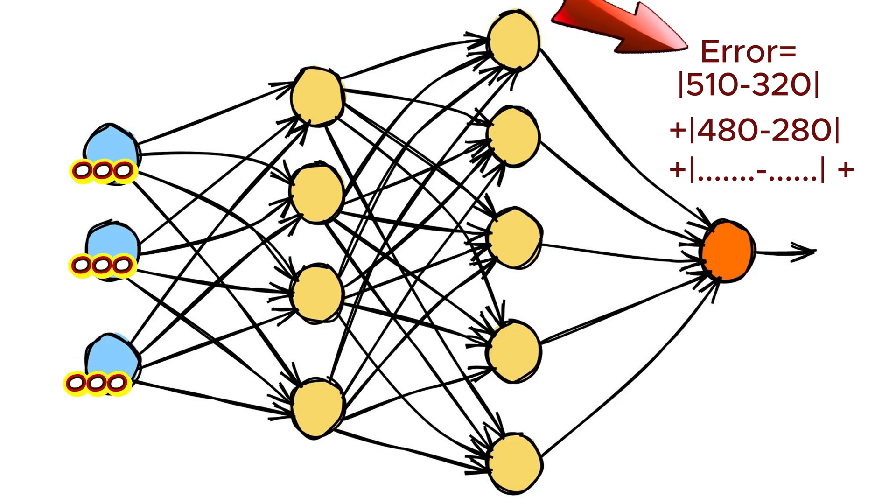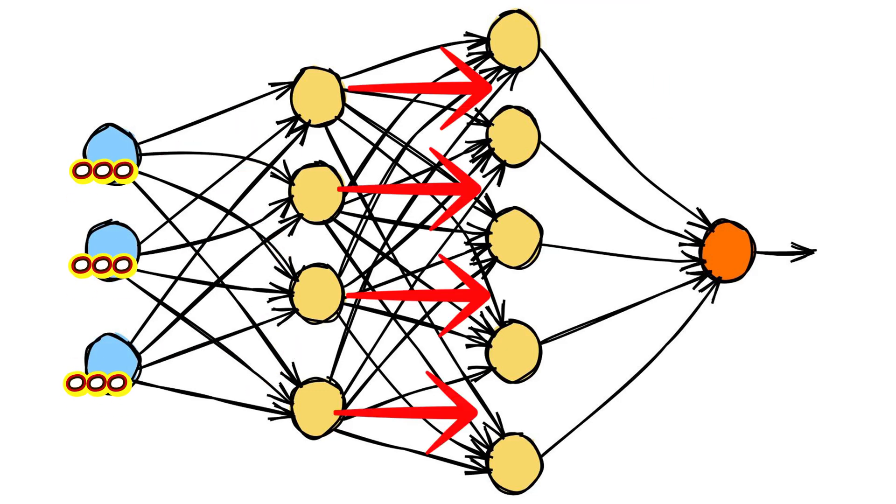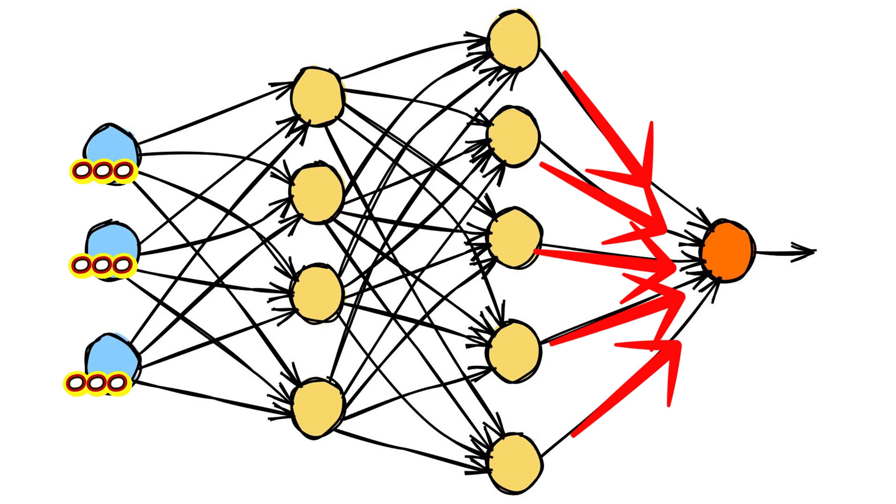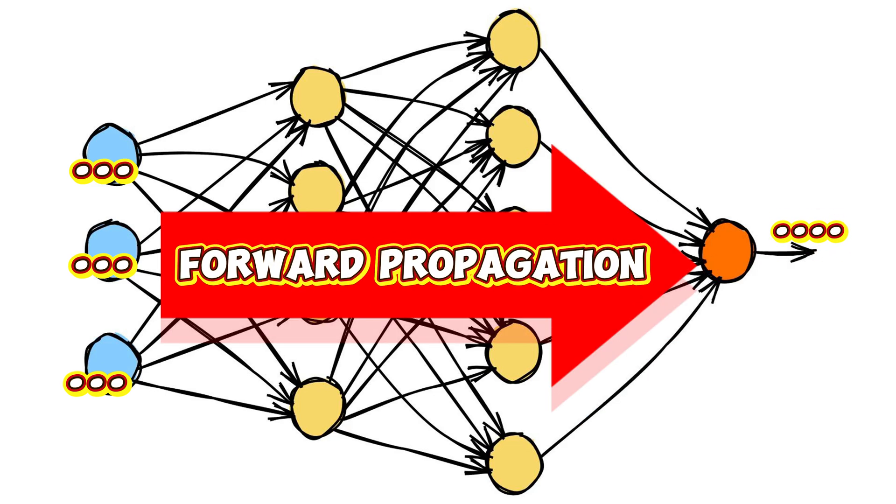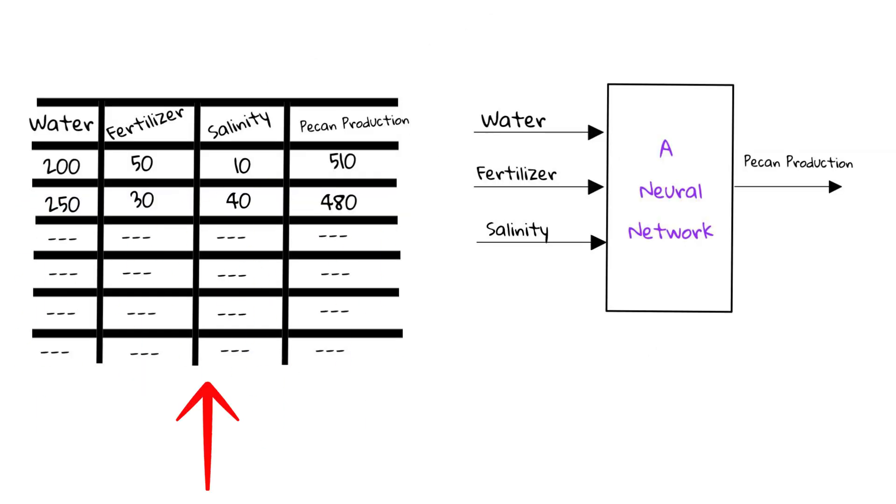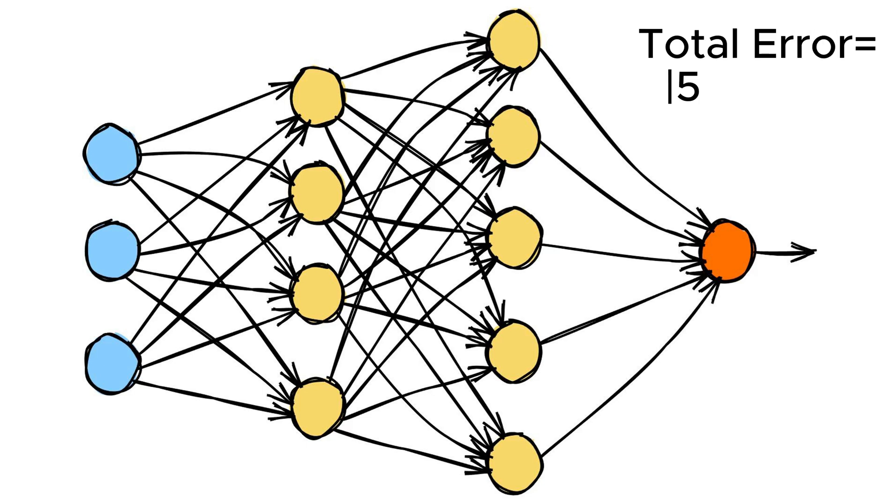When we send the data from left to right and did the calculations up to the output layer, those calculations are called forward propagation. After forward propagation of the entire data table, we have the summation of errors.